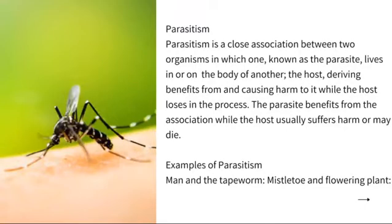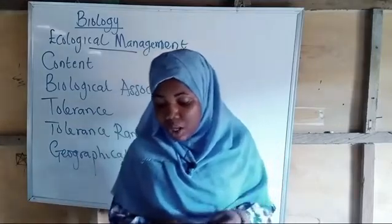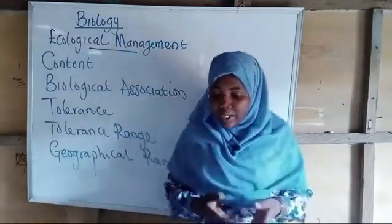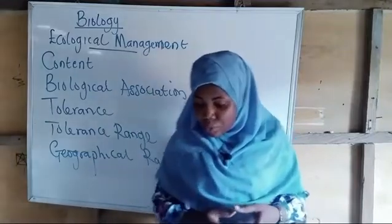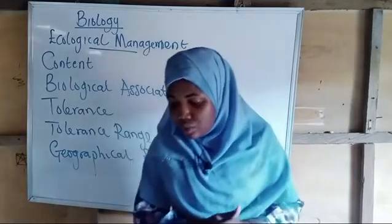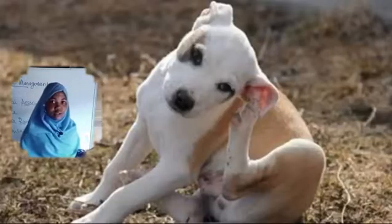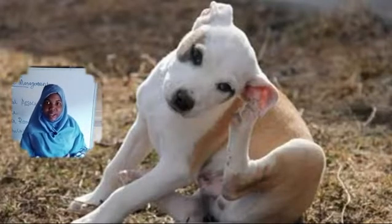Another association is parasitism — a close association between two organisms in which one, known as the parasite, lives in or on the body of another called the host. The parasite derives benefits while the host loses and may even die. The parasite benefits from the association while the host usually suffers harm.